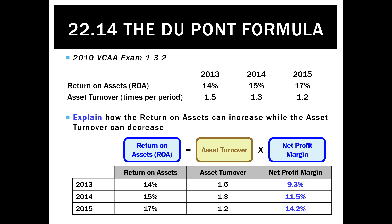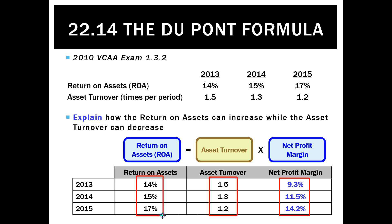Now we can answer the question — we don't need to give the numbers, but knowing the DuPont formula helps us understand that the business increased the profit made on each sale from 9.3% to 14.2%. This compensated for generating fewer sales per dollar of assets over the same period. The net result was that they sold less but made more profit on each sale, becoming a more profitable business overall — ROA went from 14% to 17%. That's a really good representation of the DuPont formula.